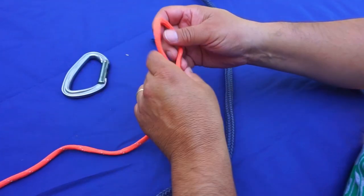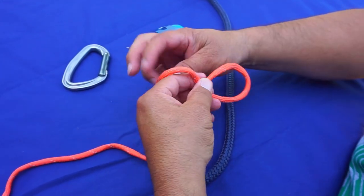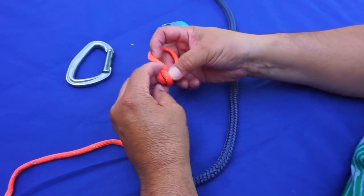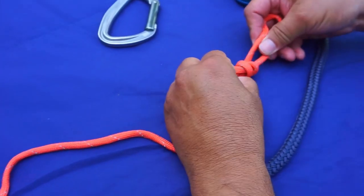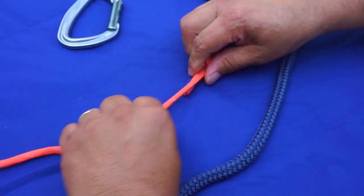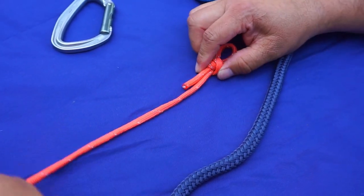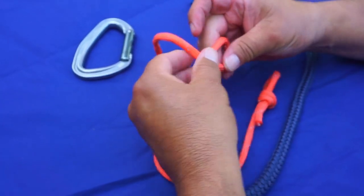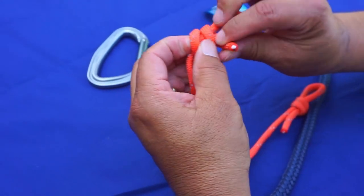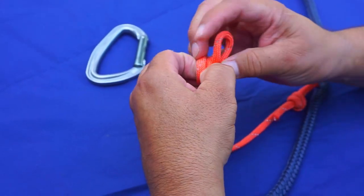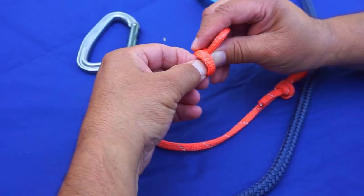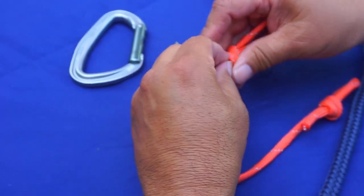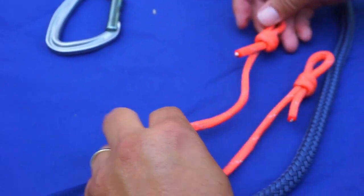Now on this paracord I'll make a couple of double fisherman's bends. This will be the part that goes to that carabiner. I'll make my bite, go a couple wraps downward, two, and then push it back through itself. Get them all tight and get the eyes ready.